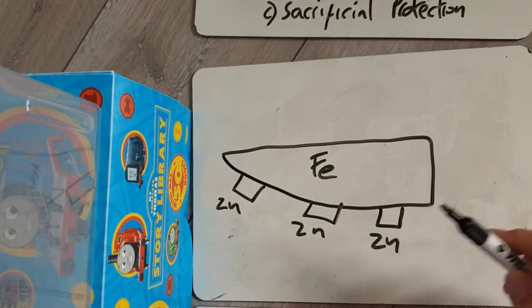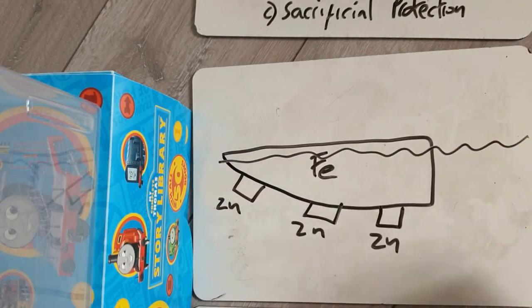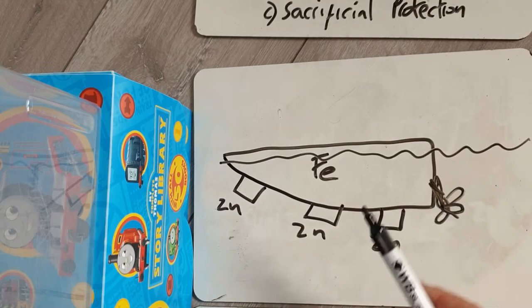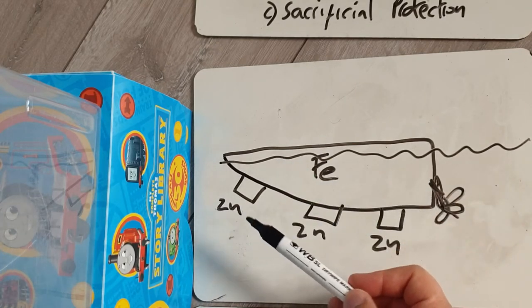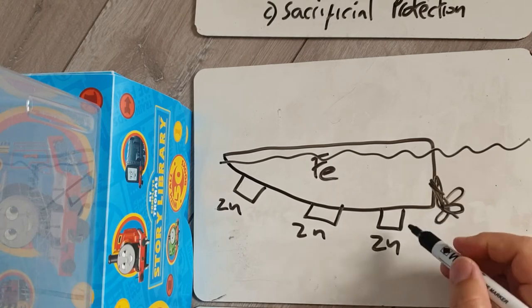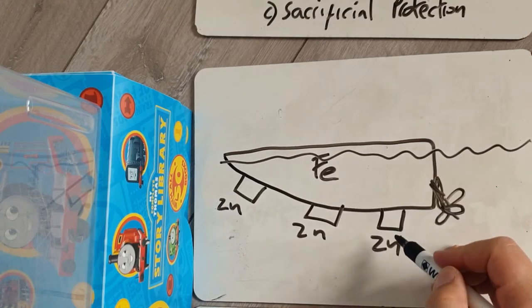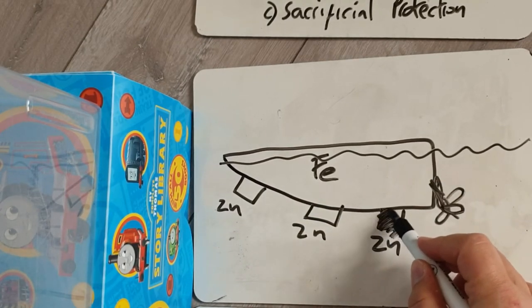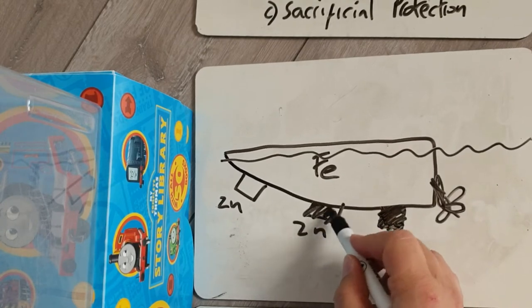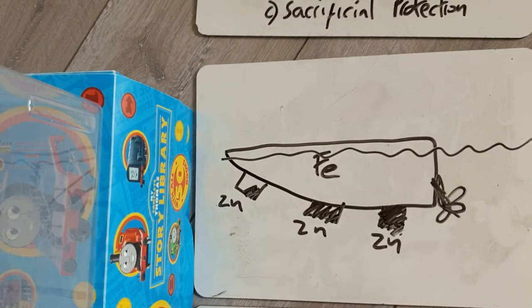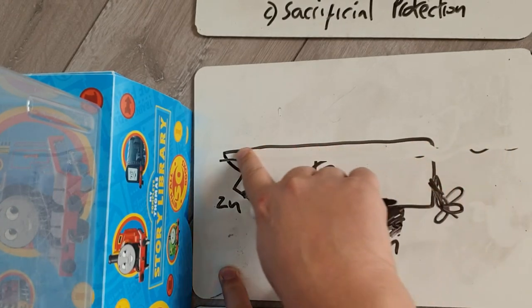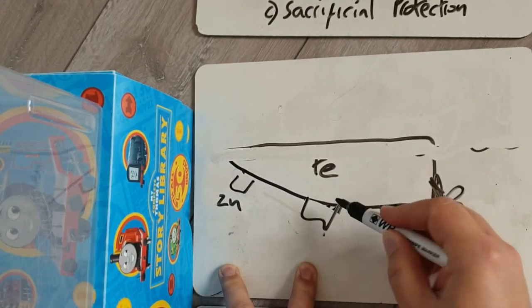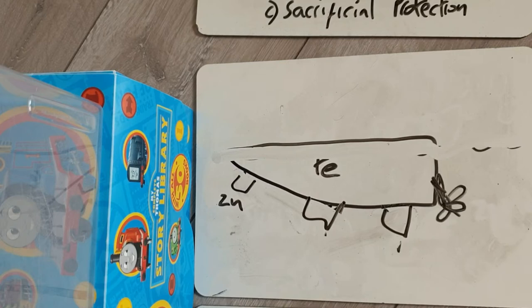Here's a diagram of a boat made of iron with blocks of zinc underneath. Because the zinc is more reactive, it reacts before any of the boat does — the zinc gradually corrodes away to form zinc oxide. As long as there's even a little zinc left, you take it to the docks, lift the boat out, remove the zinc oxide, bolt on fresh zinc blocks, and you're good to go again.